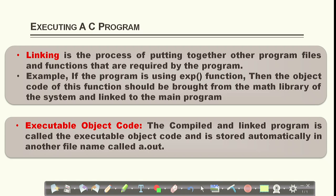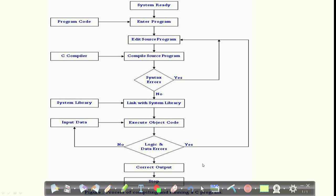Linking is the process of combining the printf function with the stdio.h library. Another example: if you use an exponential function from the math library, you must include that math library and link the function — that is linking. The compiled and linked program is called executable object code and is stored in a file called a.out. In the overall flow: enter your program, edit your code, compile the source code, and if there are syntax errors, fix them and recompile.